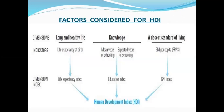The dimensions include: a decent standard of living, life expectancy at birth, and life expectancy index. The other indicators are the mean years of schooling and expected years of schooling — representing knowledge. Long and healthy life is also a key dimension.